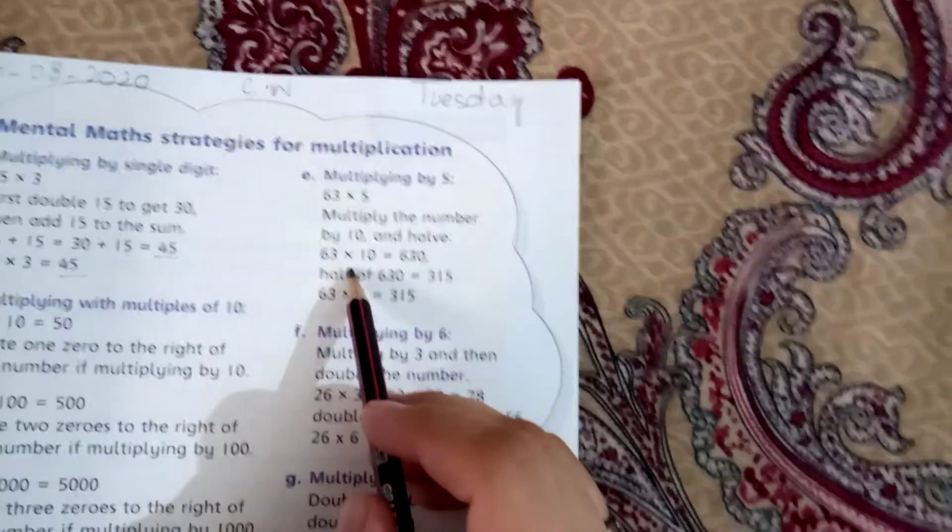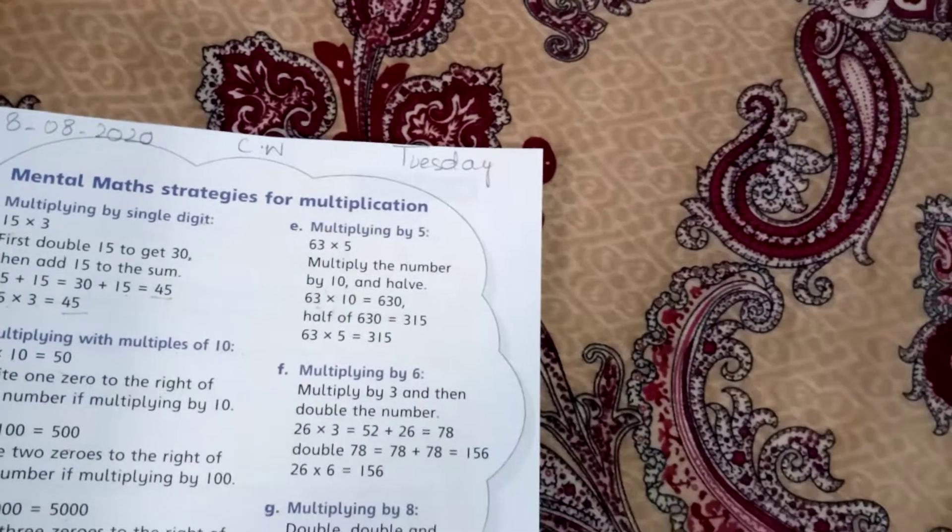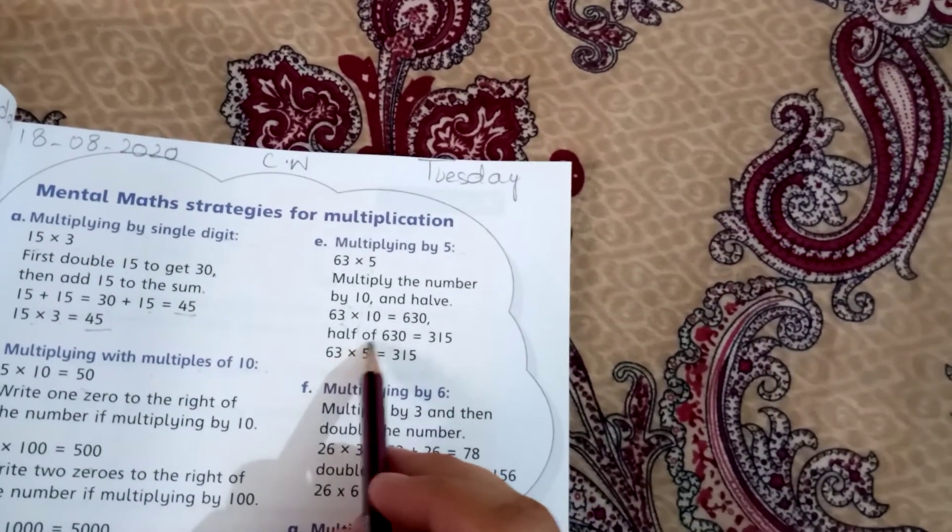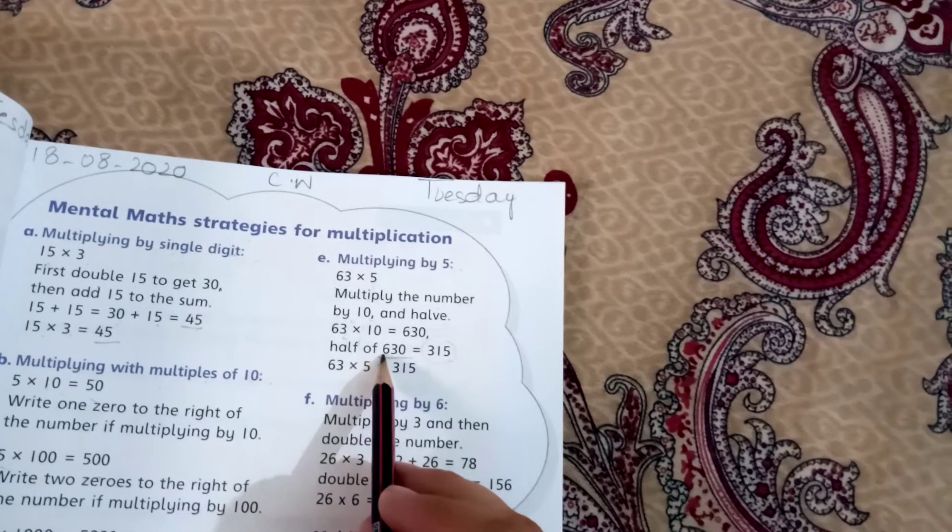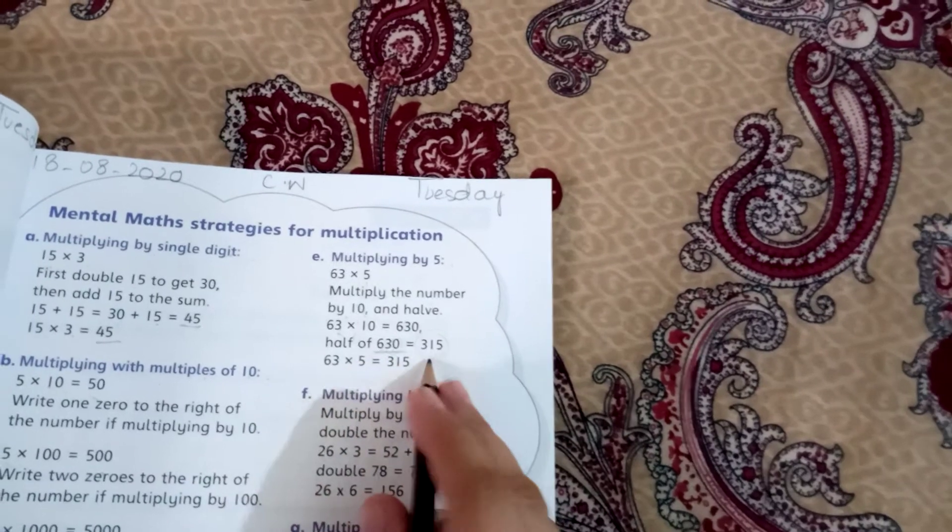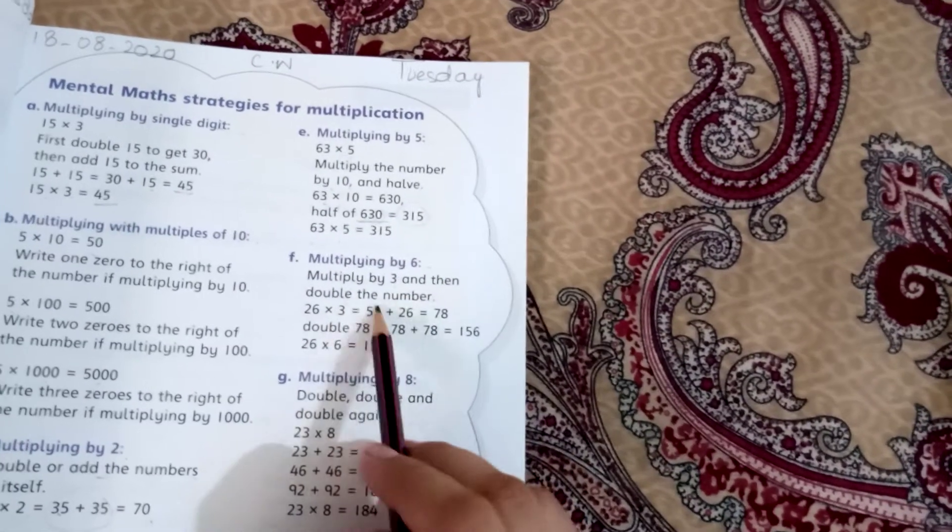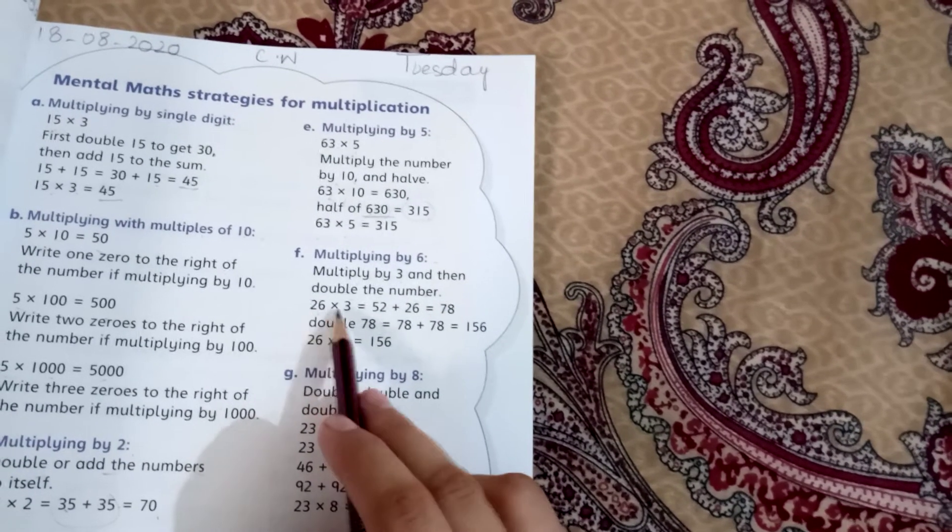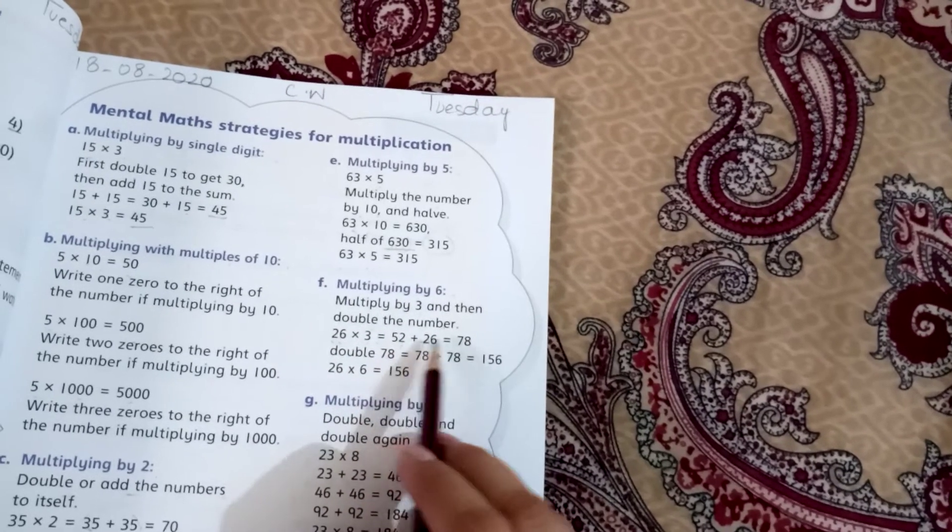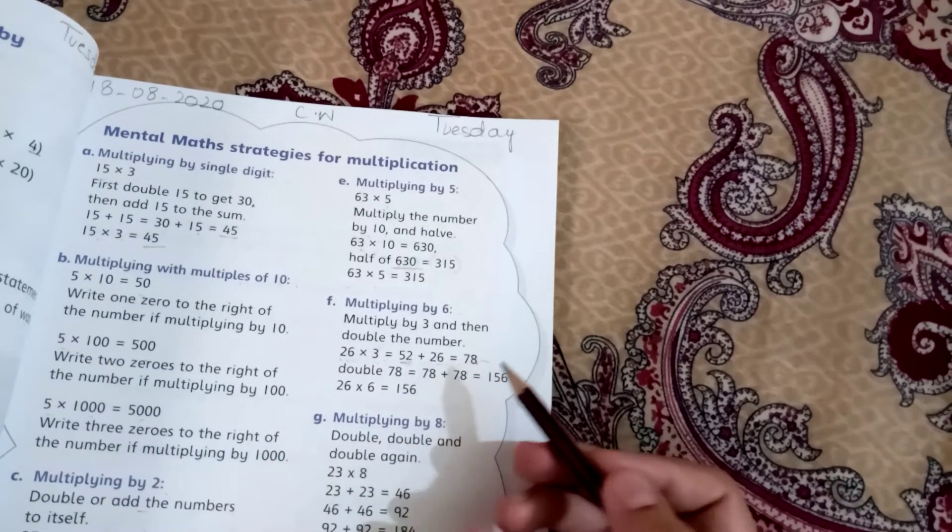Multiplying by 5: multiply the number by 10 and take half. 63 times 10 is 630, half is 315. Multiplying by 6: multiply by 3 and then double the number. 26 times 3 is 78, double it to get 156.